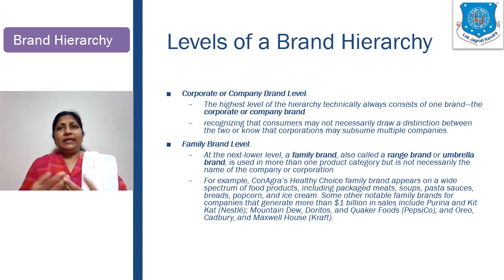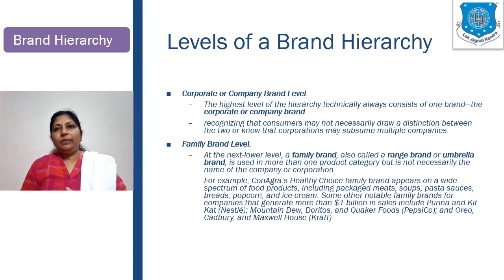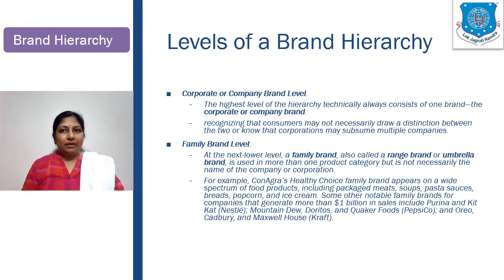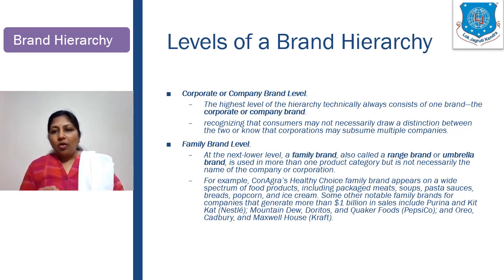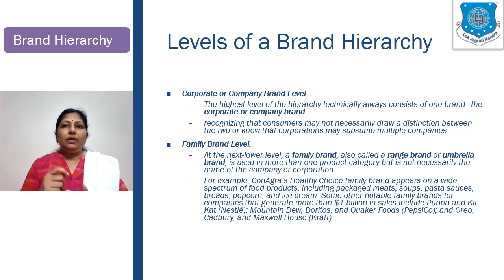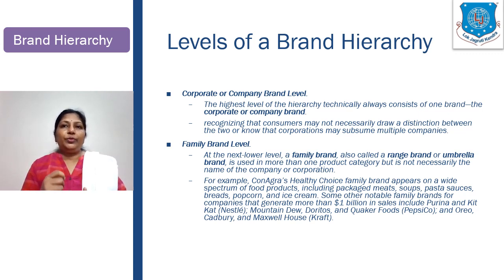At the family brand level, this is the next level, also called a range of brands or an umbrella brand, which is used in more than one product category but is not necessarily the name of the company or the corporation. For example, Healthy Choice is a family brand which appears on a wide spectrum of food products, including packaged meats, soups, pasta, sauces, breads, popcorn, and ice cream.